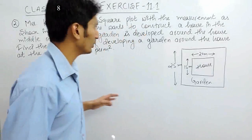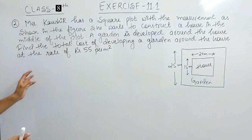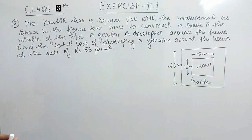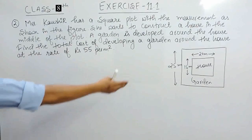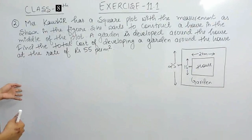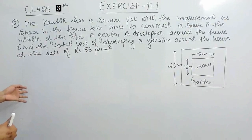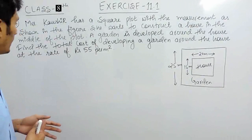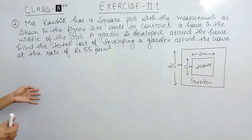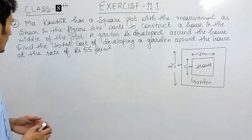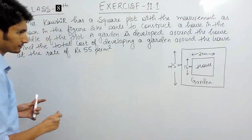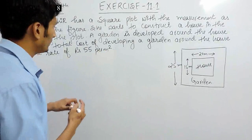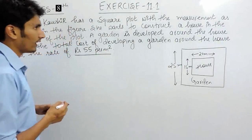In this video we are going to solve question number 2 of exercise 11.1. The question says Mrs. Kaushit has a square plot with the measurements as shown in the figure. She wants to construct a house in the middle of the plot, and a garden is developed around the house. We have to find the total cost of developing the garden at the rate of ₹55 per square meter.